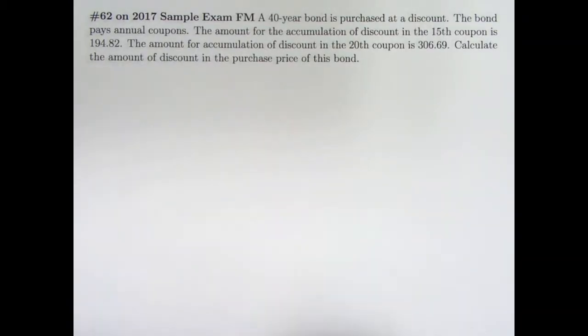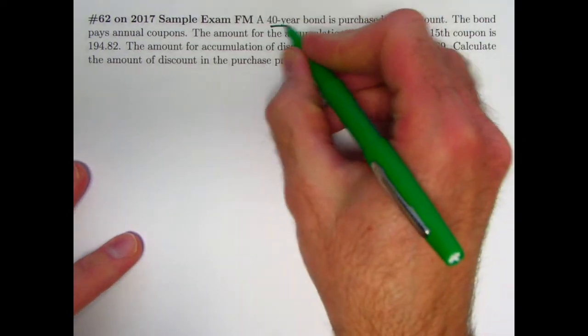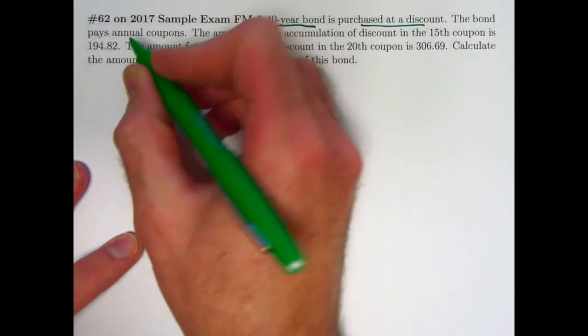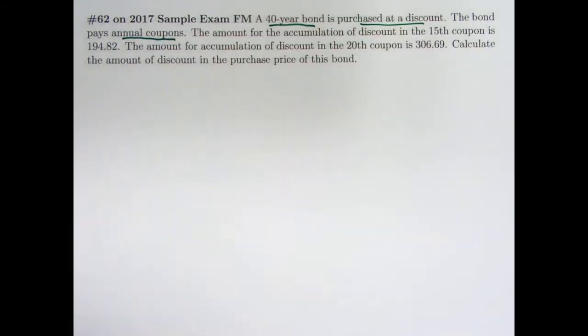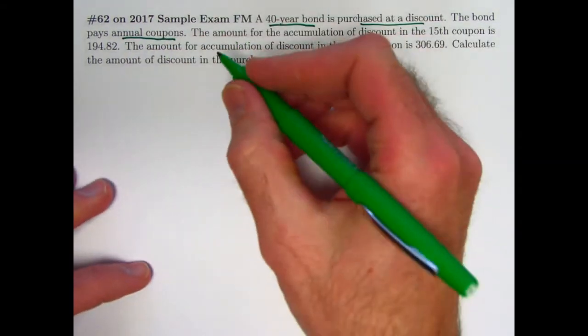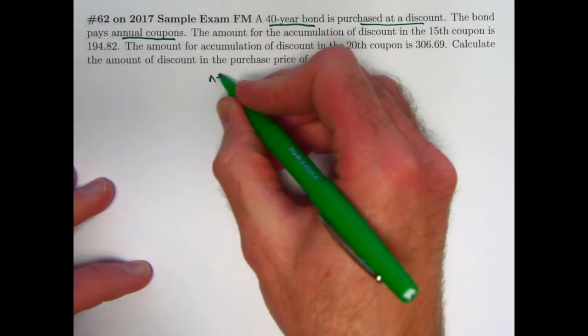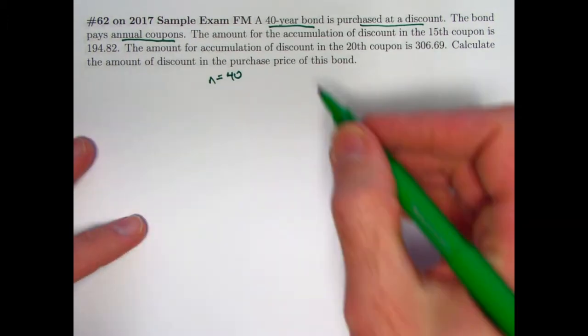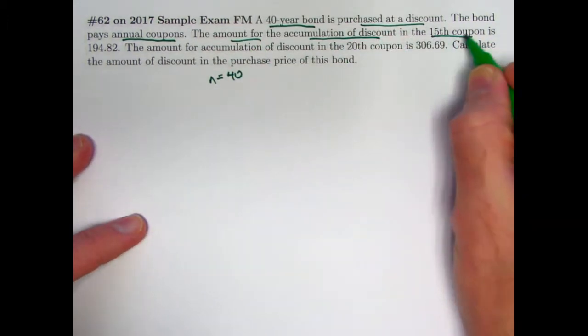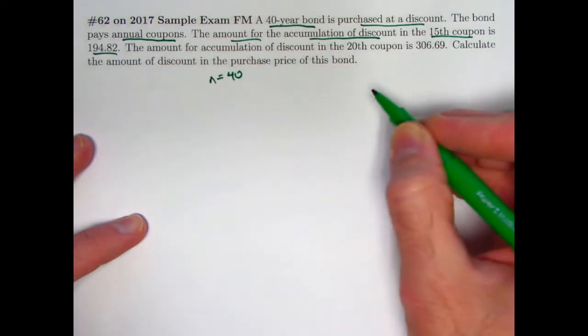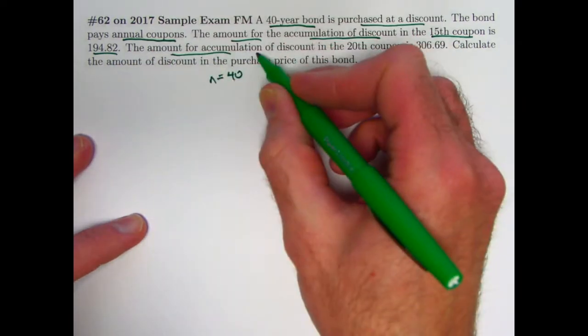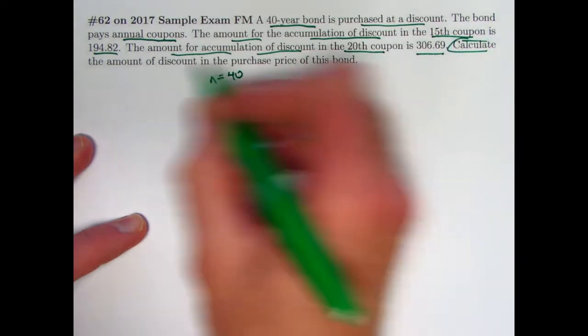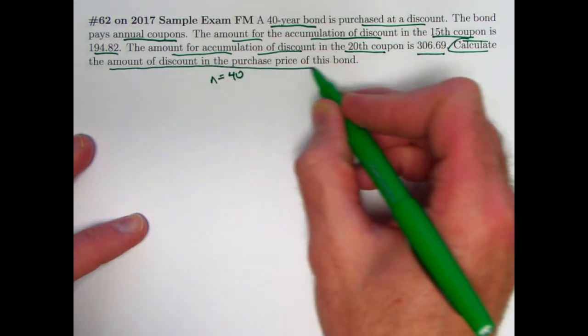So here's the situation. It's kind of a strange situation here. We've got a 40 year bond, so a very long term, purchased at a discount. The bond pays annual coupons instead of semi-annual coupons, so that's just something to be careful of. We can certainly deal with that. That means n is 40 and t is going to be in years instead of half years. The amount for the accumulation of discount in the 15th coupon is $194.82. The amount for the accumulation of discount in the 20th coupon is $306.69. We want to calculate the amount of the discount in the purchase price of this bond.